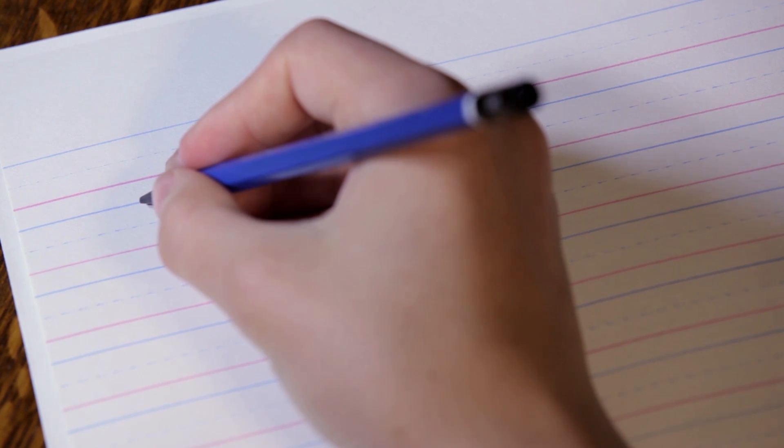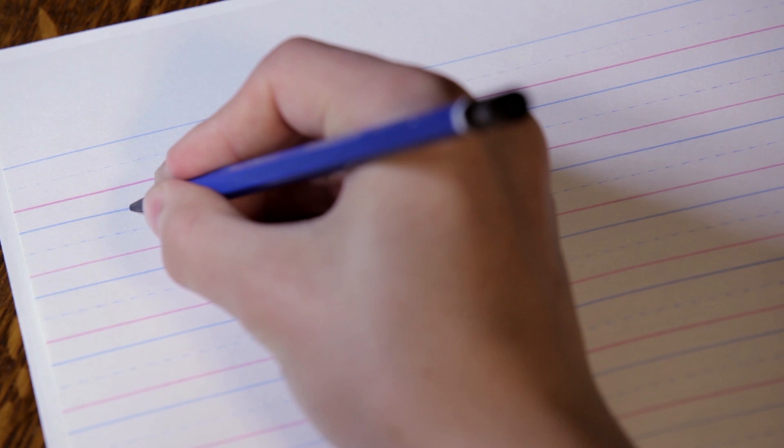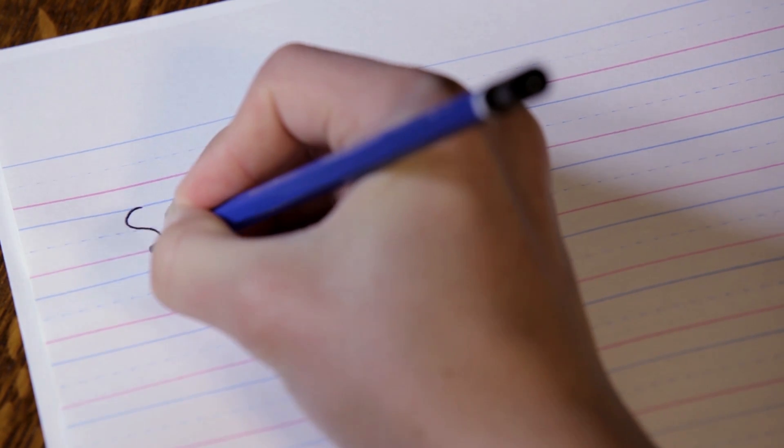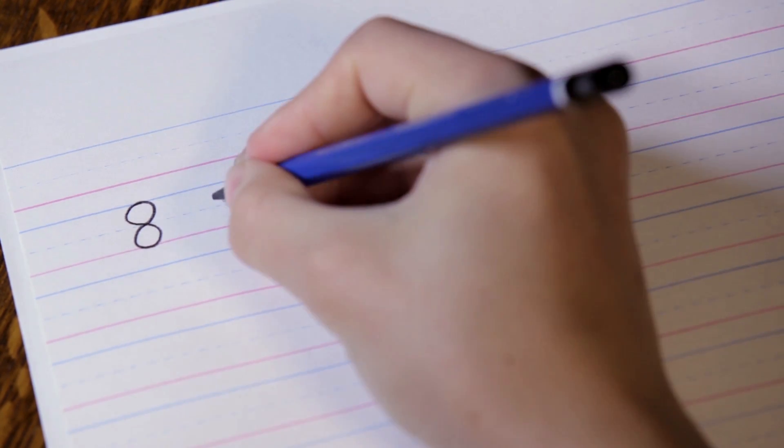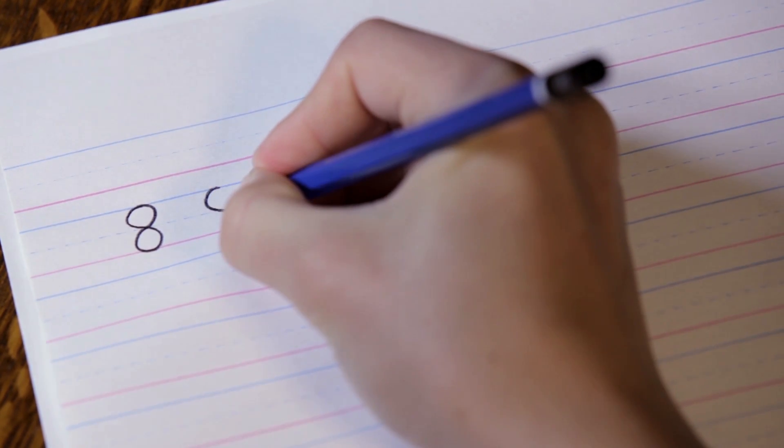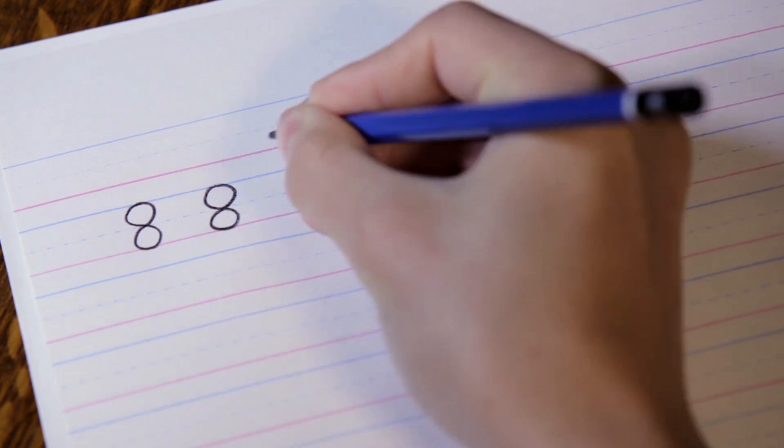Writing the number eight is so special, we call it making a figure eight. You start at the top, curve down to the left, down to the right, up to the left, up to the right. Let's do it again. Start at the top, curve down to the left, down to the right, curve back left, curve back right, and now you have an eight.